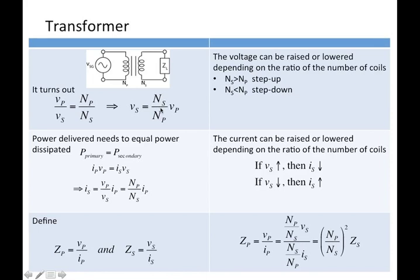This essentially means the voltage can be raised or lowered depending on the ratio of those turns. We can step up the voltage — going from 10 to 20, for example — or we can step it down, going from 10 to 5. We do that by controlling the number of turns.